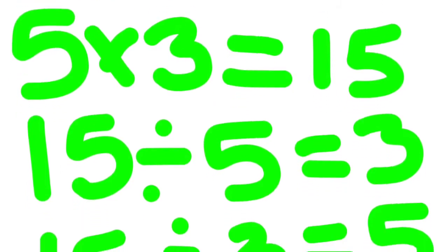Do you know the fact family? Three times five equals fifteen. Five times three equals fifteen. Fifteen divided by five equals three. And fifteen divided by three equals five.